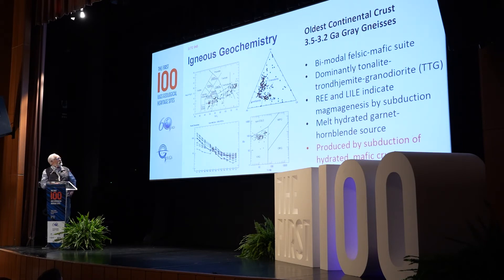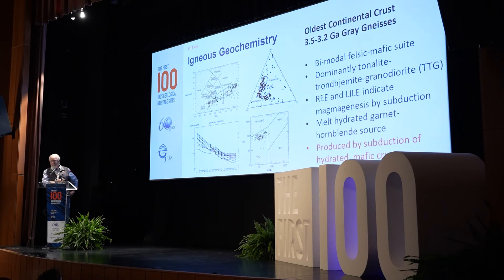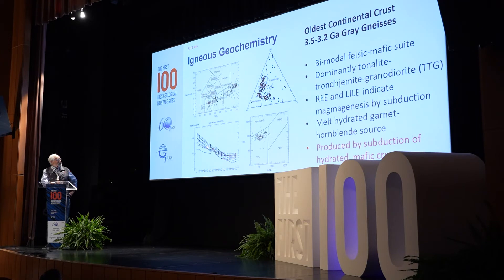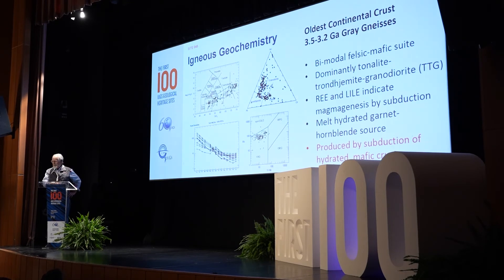In terms of geochemistry, when we look at the gray gneisses they are dominantly bimodal, with a mafic component and a silicic component. The silicic component is dominantly sodic — they are not true granites. This is the so-called TTG, or tonalite-trondhjemite-granodiorite suite, producing sodic granites in the first stage of crust formation. Looking at trace elements including rare earths and tectonic discrimination diagrams, these rocks formed by magmagenesis through subduction in the presence of garnet and hornblende — produced from a hydrated mafic crust due to subduction.